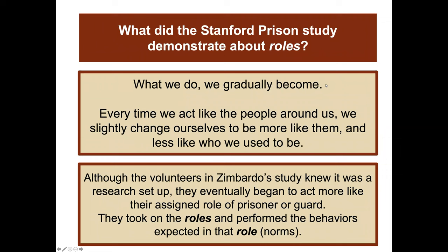What did the Stanford Prison Study demonstrate about roles? What we do, we gradually become. Every time we act like the people around us, we slightly change ourselves to be more like them. Although the volunteers knew it was a research setup, they eventually began to act more like their assigned role of prisoner or guard — taking on the roles and performing the behaviors expected in that role, the norms.